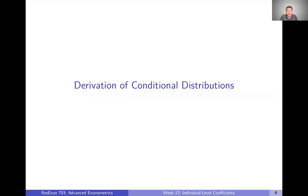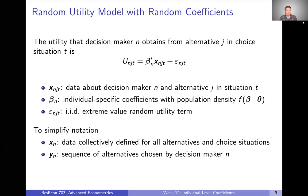So in the last video, we kind of described what a conditional distribution of coefficients is. We went through this thought experiment to think about how to construct the group we're talking about when we talk about this distribution. But now let's actually formally define mathematically what this conditional distribution is.